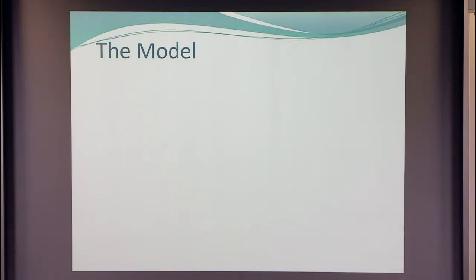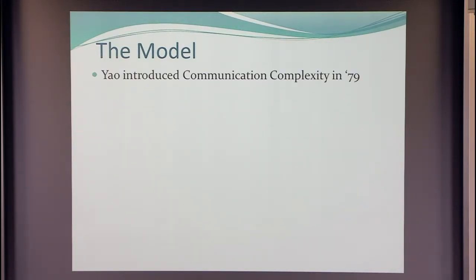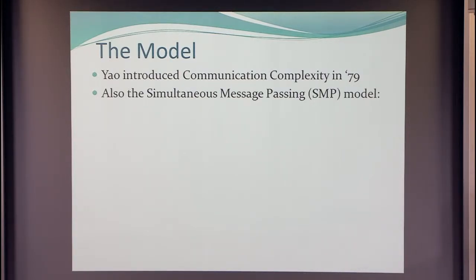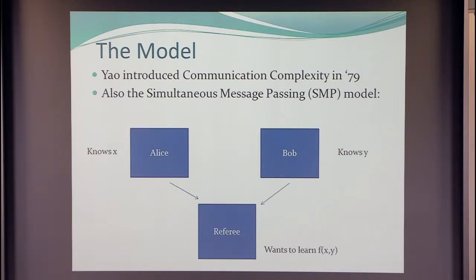So the model: everybody knows Yao introduced communication complexity in 1979, and in the same paper he also introduced the simultaneous message passing model. That model works like this: we have Alice and Bob, but we also have a referee. Alice has an input x, Bob has y, and the referee does not have an input, but he is supposed to learn the output of the function.